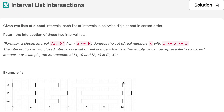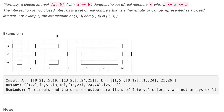Hello everyone, welcome to the channel. Today's question is Interval List Intersections. If you are new to the channel, please consider subscribing — we solve a lot of interview questions on this channel that can definitely help you. The question says: given two lists of closed intervals, each list is pairwise disjoint and in sorted order. Return the intersection of these two interval lists. Looking at the example, we are given A and B and need to return the intersection.